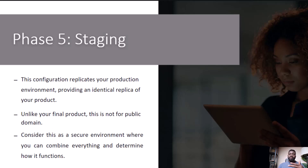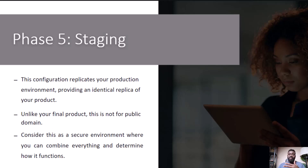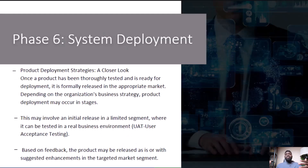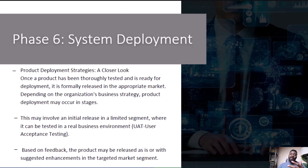Staging also allows stakeholders to validate that software changes meet the requirements and expectations set during the development phase. It provides an opportunity to confirm that new features or updates work as intended. Once the software passes testing and staging, it's ready to be deployed — making it available to users — which could involve installing it on a server, publishing it online, or distributing it to users.